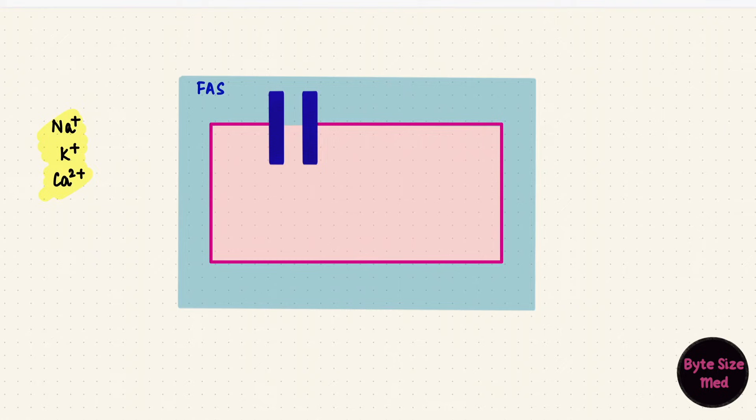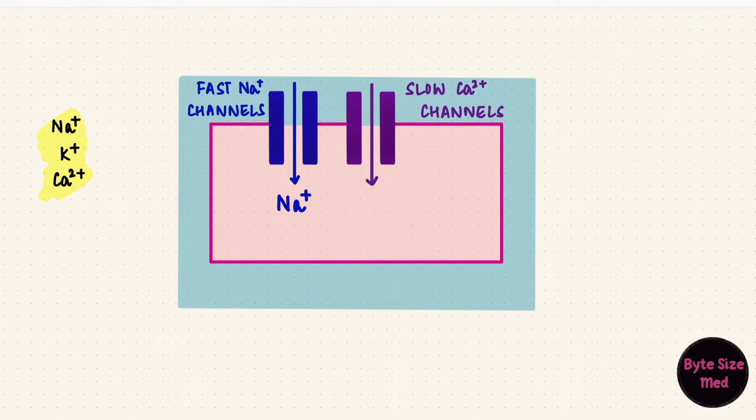They use different channels during the action potential. The sodium channels are called fast channels because they open and close quickly. The calcium channels are the slow L-type calcium channels. When the channels open, the gradient is such that sodium and calcium enter the cell from the extracellular fluid to the intracellular fluid.